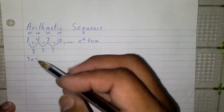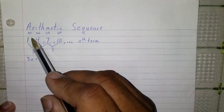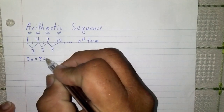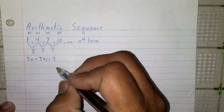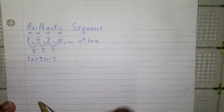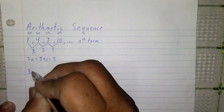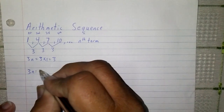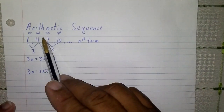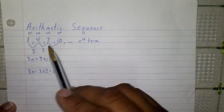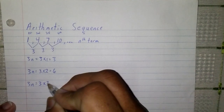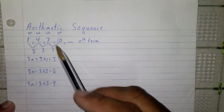Since this is the first number we want, the first set of 3s, we say 3 times 1, which gives us 3. But we wanted the number 1. Let's try the next: 3n equals 3 times 2, the second position, giving us 6. But we wanted 4. Then 3n equals 3 times the third position, giving us 9. But we wanted 7.